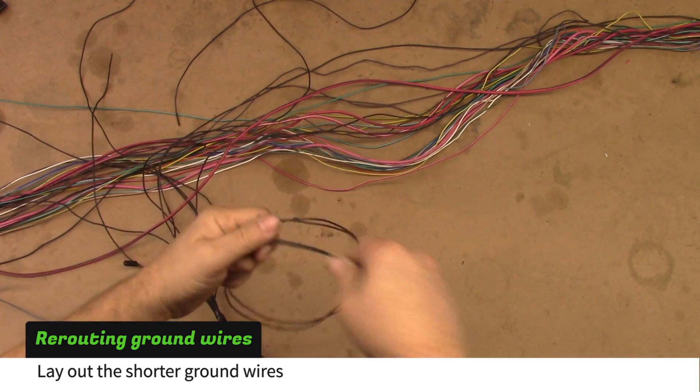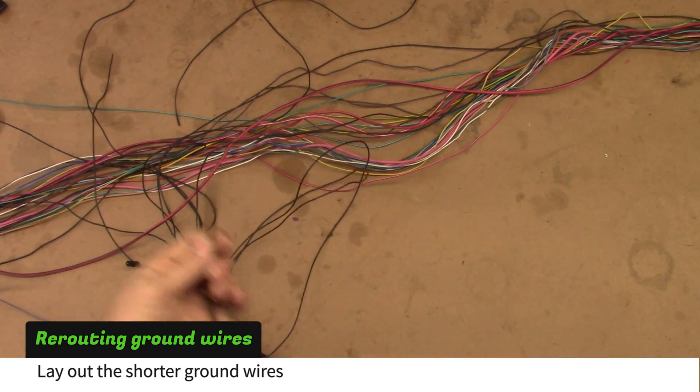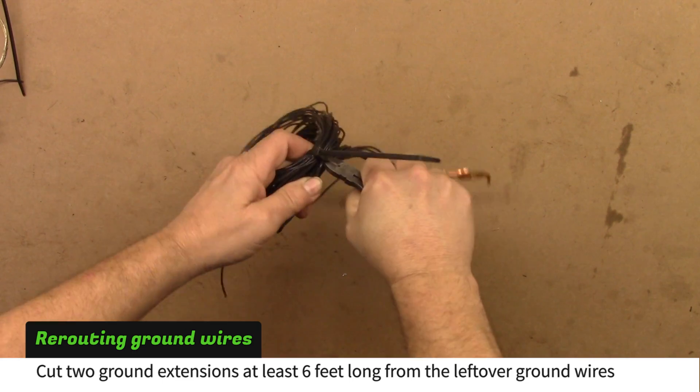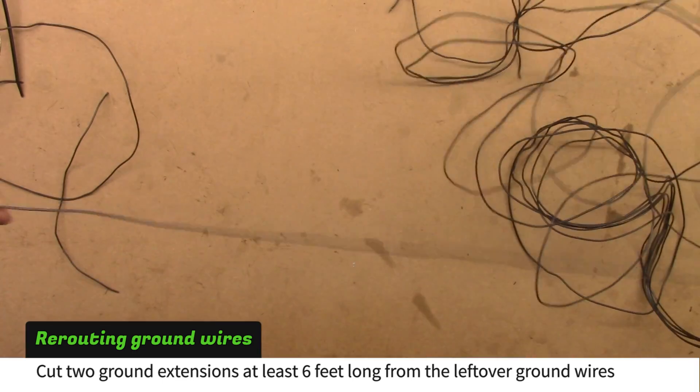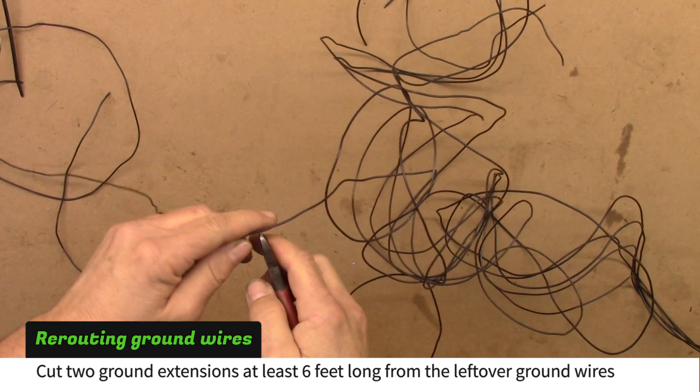Next, find the two shorter ground wires coming from the ground lugs. These need to be extended. Cut two six-foot extensions from the roll of driver side grounds removed in an earlier video. This roll will be the one without the large defroster ground wire.